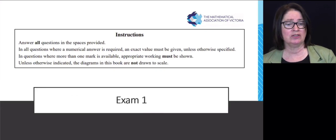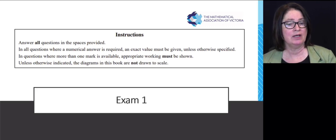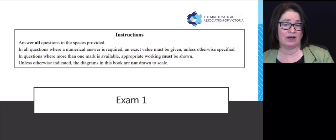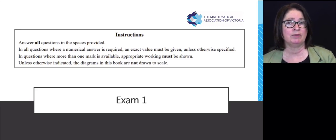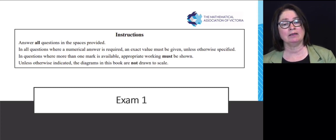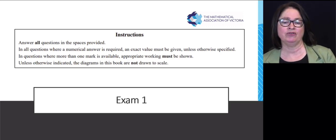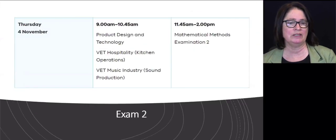Exam one general instructions: answer all questions in the spaces provided. If you do run out of room, just write 'go to page whatever' so that when it's scanned, the scanners will know. In all questions, give an exact answer unless otherwise specified. So if the answer's got a π in it, leave it with the π. Don't make that 3.14. In questions worth more than one mark, you must show appropriate working. And the diagrams are not drawn to scale.